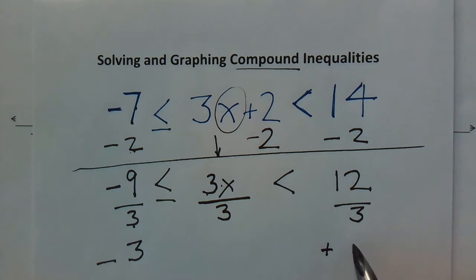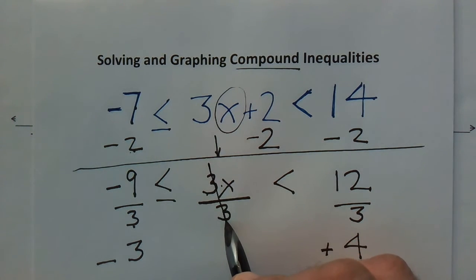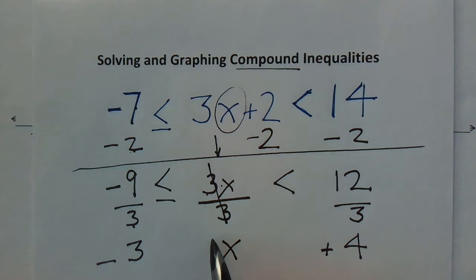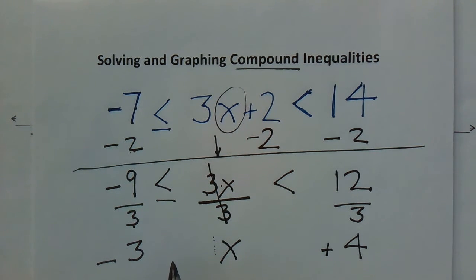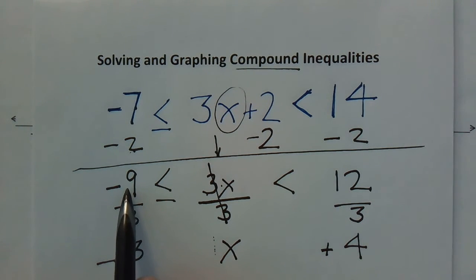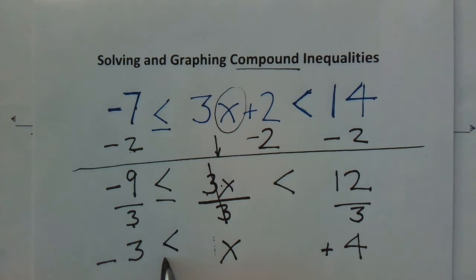In the middle, 3 divided by 3 is 1, so I draw a line through the 3 as a reminder that I'm left with just x — always remember there's an invisible 1 in front of x. Now before bringing down the signs again, I ask: did I divide by or multiply by a negative? No — I divided by positive 3. The fact that I divided into a negative number is irrelevant; what matters is what I divided by. So the signs stay the same.